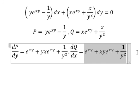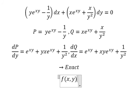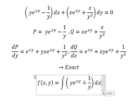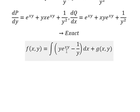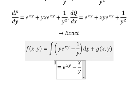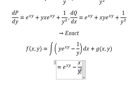So we can use the exact equation method. Now I need to set up the function f(x, y) equal to the integral. I will choose this term here. The integral of e^(xy) — we have the dx, so we get e^(xy) minus x/y, because we concentrate on x, so 1/y acts like a constant — that's why we have x/y. And then we have g(x, y).